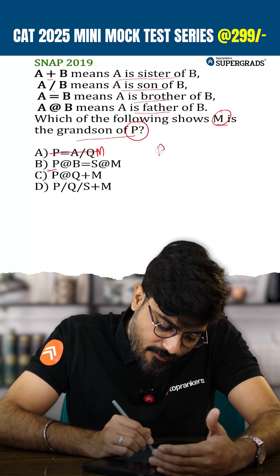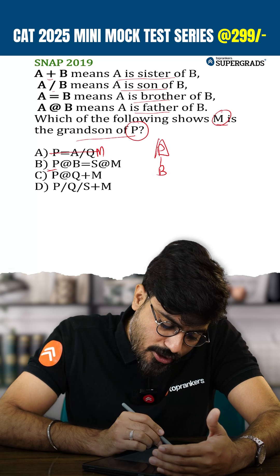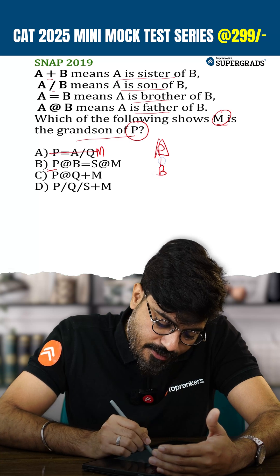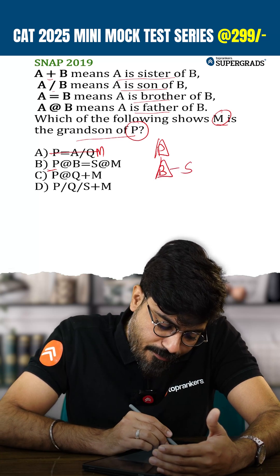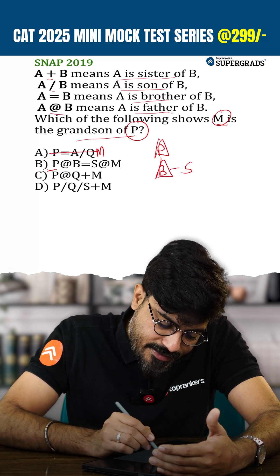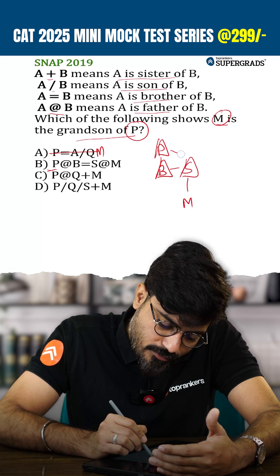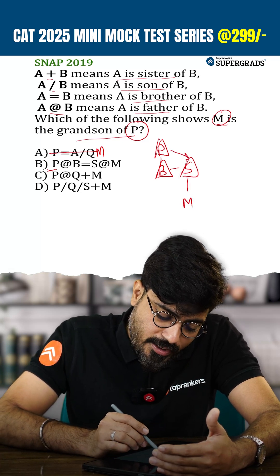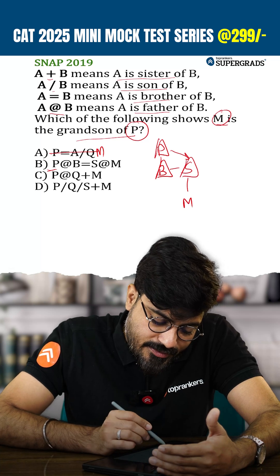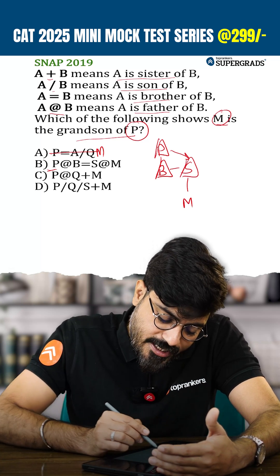We decode option B: P @ B means P is the father of B. B = S means B is the brother of S. And S @ M means S is the father of M. Since this also involves a son, there is a possibility that M is the grandson of P.